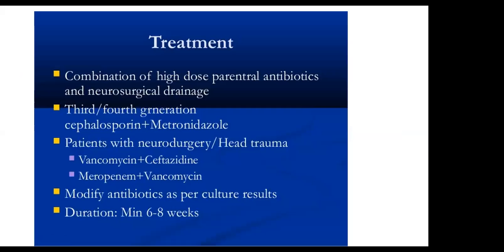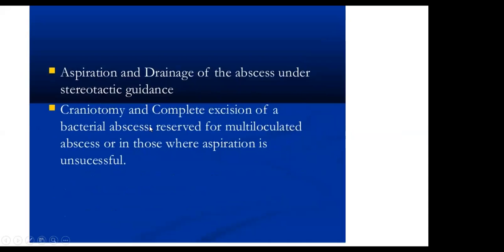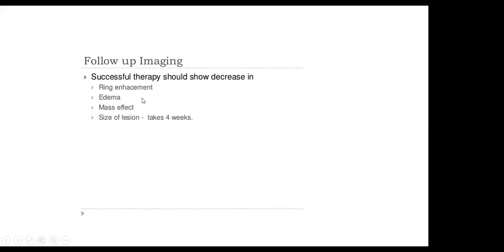Treatment: combined antibiotics should be started as soon as possible and can be changed according to culture and sensitivity results. Prophylactic anticonvulsants and steroids can be given to decrease vasogenic edema. Aspiration, drainage, craniotomy, and complete excision can be done when stereotactic aspiration fails. Follow-up imaging with successful therapy should show a decrease in ring enhancement, edema, and mass effect; changes typically take about four weeks.